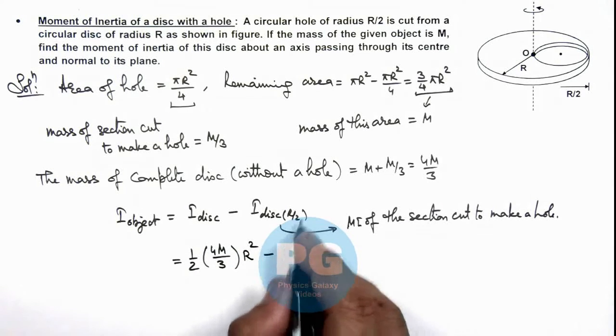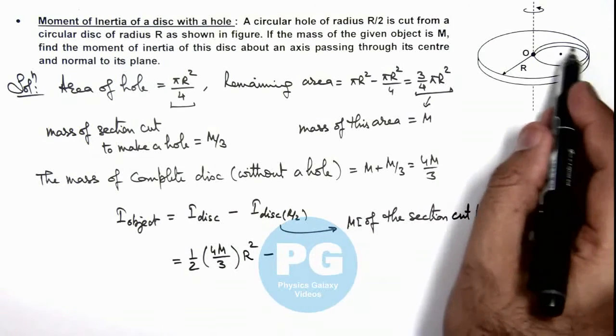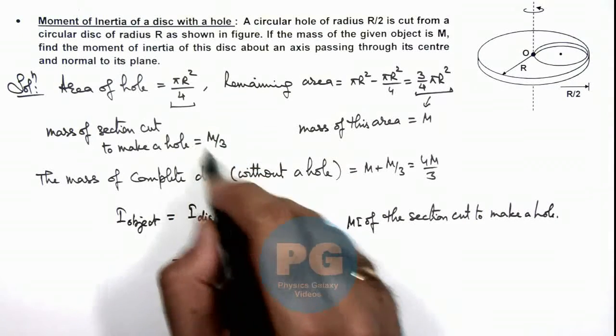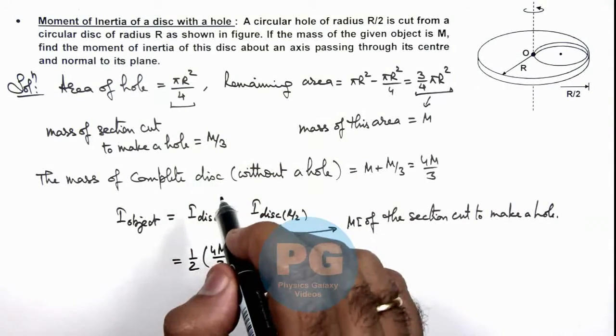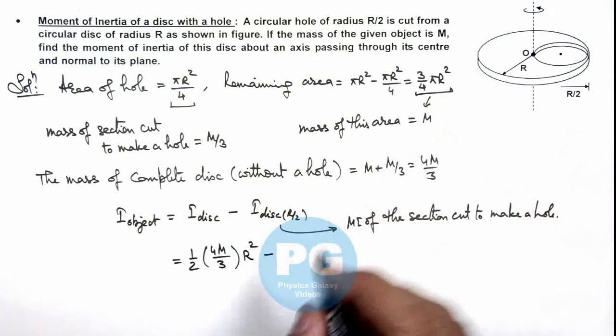Minus, if we calculate the moment of inertia of this part of disc which is having a mass M/3, we can calculate by parallel axis theorem.